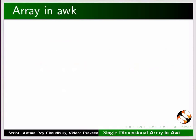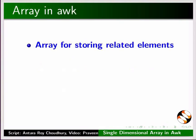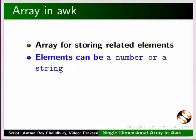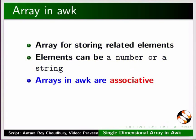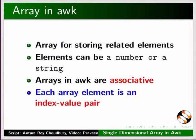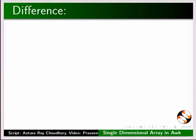What is an array in awk? Awk supports arrays for storing related elements. Elements can be a number or a string. Arrays in awk are associative, meaning each array element is an index-value pair. It looks similar to arrays in other programming languages, but there are some important differences.